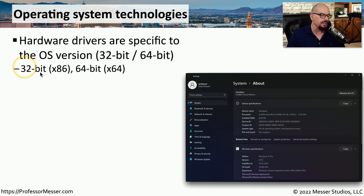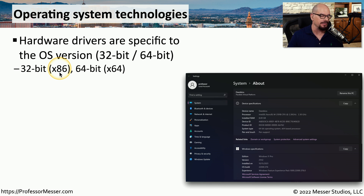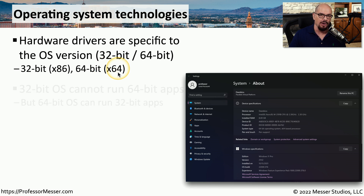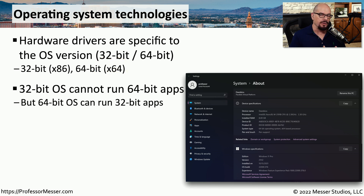Sometimes you'll see 32-bit software abbreviated as x86 software. This is a reference back to the Intel 8086 line of processors. If it's a 64-bit processor, we abbreviate that as x64. It's also important to know that if you're using a 32-bit operating system, you cannot run 64-bit applications in that OS.